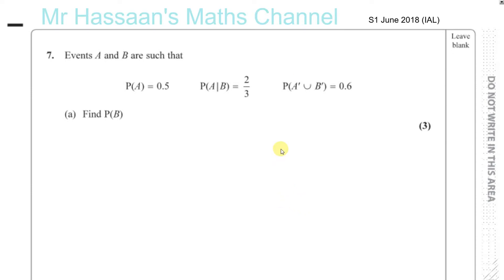Now for question number 7 from S1, June 2018, the International A-Level Paper, Statistics 1. A question about probabilities and Venn diagrams.